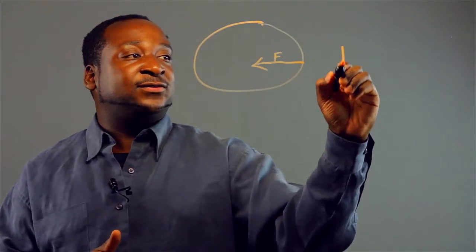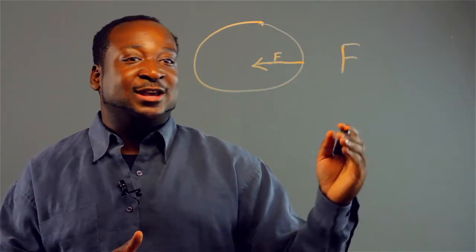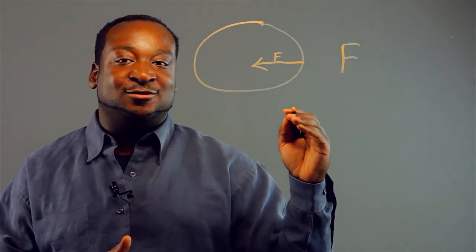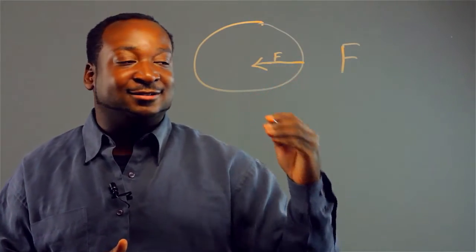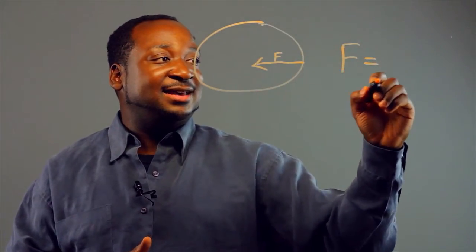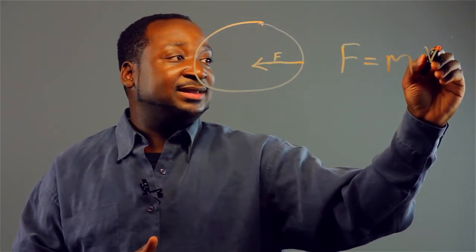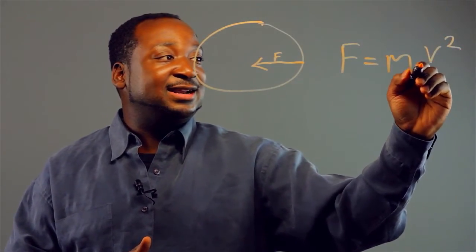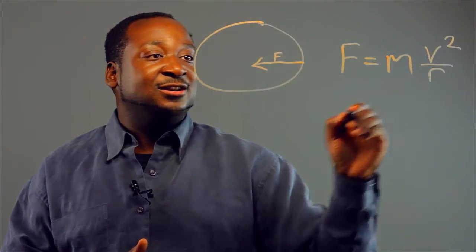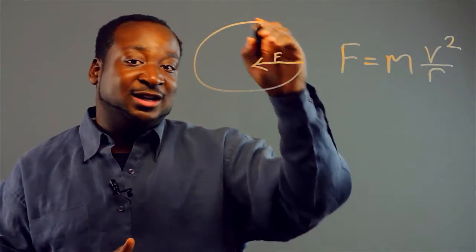So the force to help you go around in a circle, which is generated through the tires, is equivalent to F equals M, and we're going in a circle, V squared over R, the radius of the circle of the track.